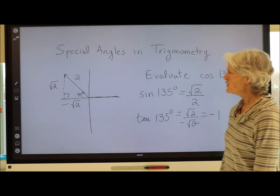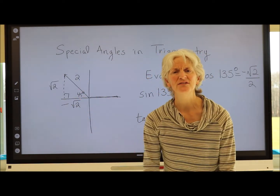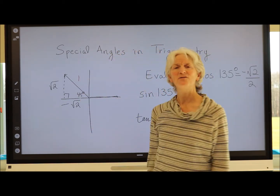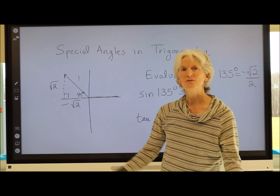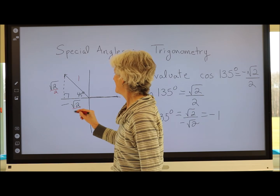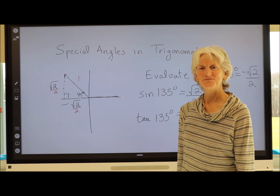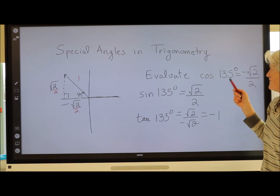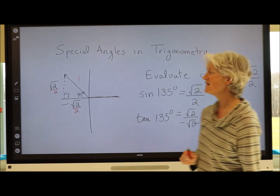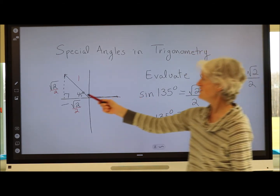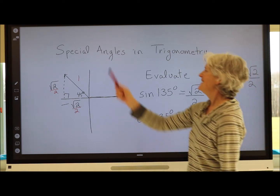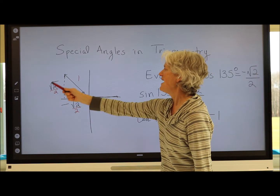You'll find that using different values gives the same answers. For those who prefer the unit circle, dividing each side by 2 gives legs of √2/2, and you still get cos(135°) = −√2/2, sin(135°) = √2/2, and tan(135°) = −1.